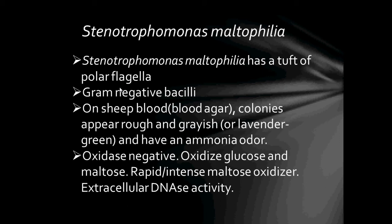They are also oxidase negative, and they oxidise glucose and maltose, being rapid or intense maltose oxidisers. A maltose test determines if the microbe can ferment maltose as a carbon source. They also exhibit extracellular DNase activity — while most pathogenic bacteria like Group A Streptococcus produce extracellular DNase, the benefit of this activity is not that well understood.